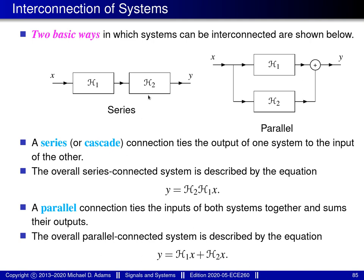In the case of a series interconnection, what we have is something like what's shown here where we have two systems, one denoted by H1 and the other one denoted by H2. With a series interconnection, we take the output of the first system and tie it to the input of the second system.